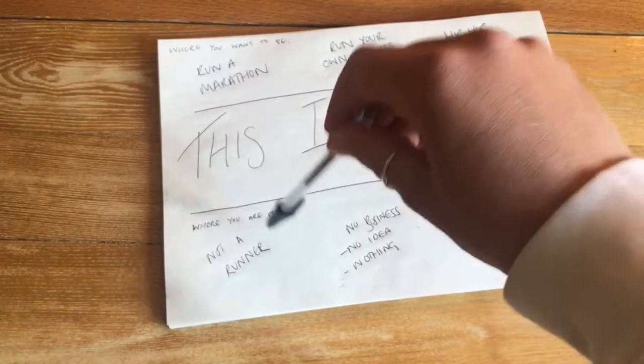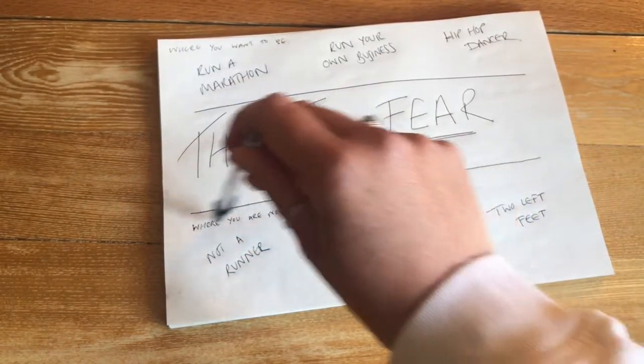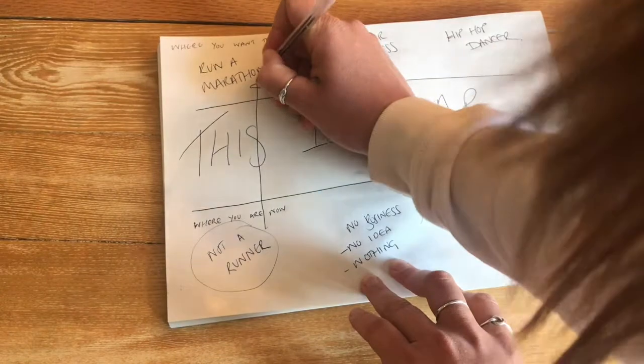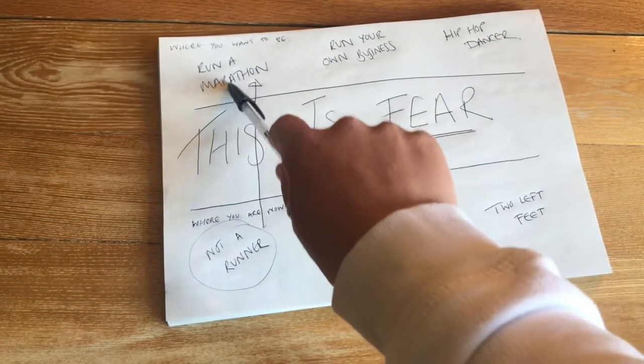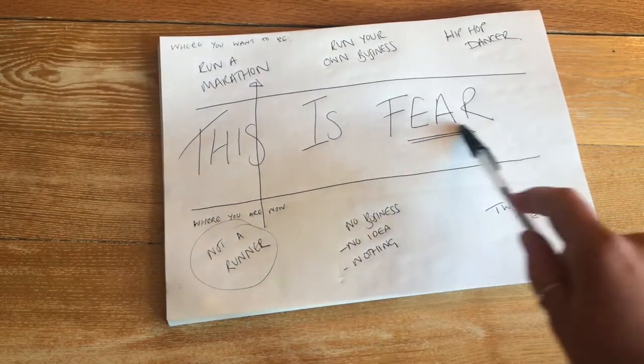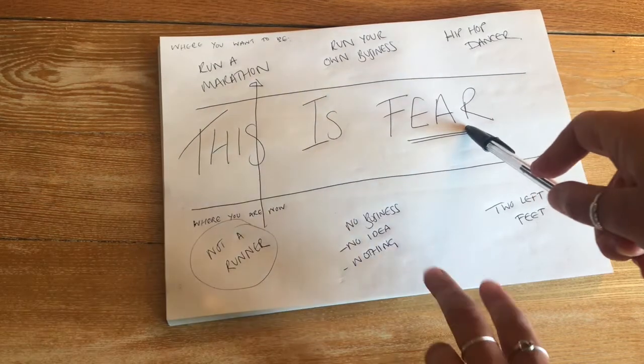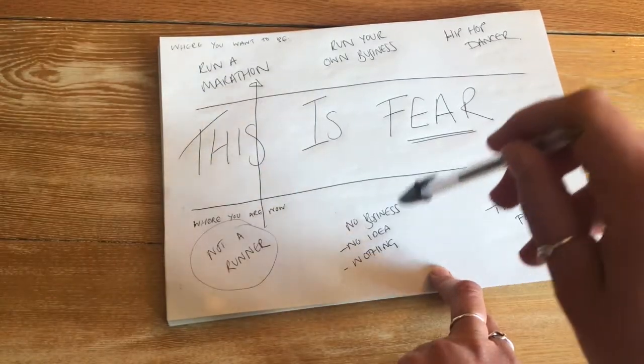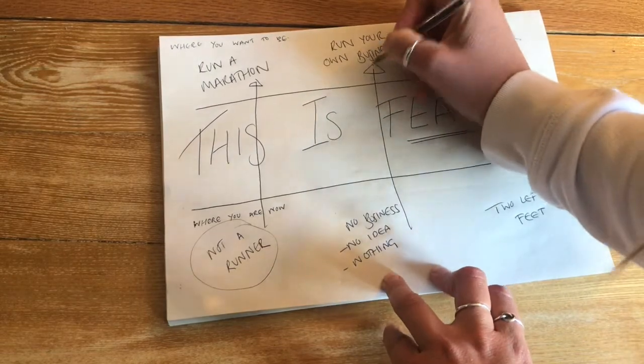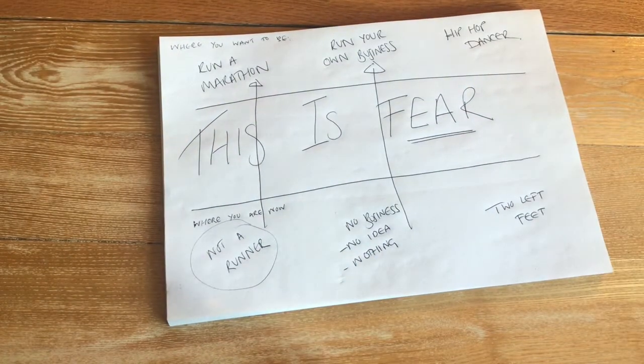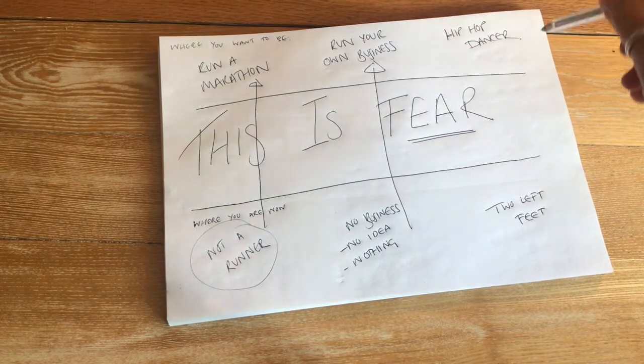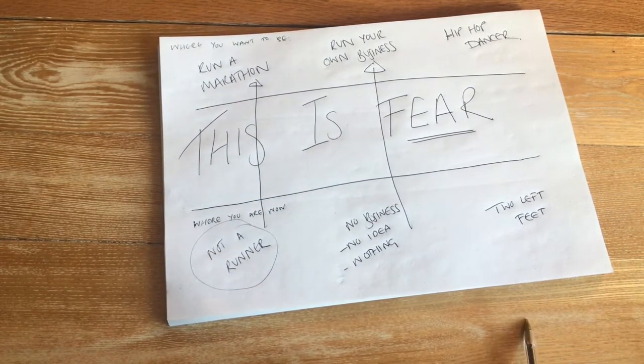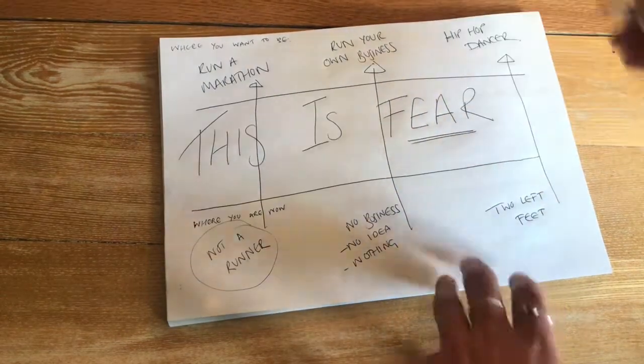Now in order for you to run a marathon, you have to go from not being a runner. You have to go from here and you have to get through fear. You have to move through fear, and if you don't ever run that marathon, the reason you didn't run it was fear. If you want to run your own business and you're here, you have no business, no idea, nothing, you have to move through fear to run your own business. If you want to be a hip-hop dancer and right now you would classify yourself as such a terrible dancer you basically have two left feet, you have to move through fear to be that hip-hop dancer.